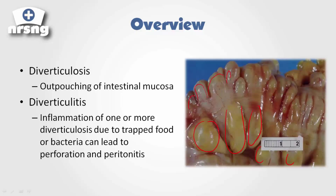The problem is, however, if something gets trapped inside here — a little seed, little pieces of food, etc. — gets trapped inside these diverticuli, they start to become inflamed. And as they become inflamed, they can become infected. This infection, this bacteria, can lead to perforation and peritonitis. So, once the diverticuli become inflamed, that becomes diverticulitis, and diverticulitis can lead to perforation and peritonitis. That's where the concern is with this.